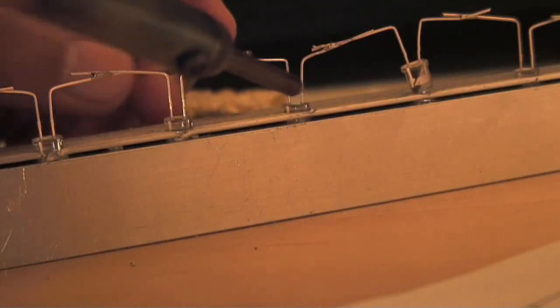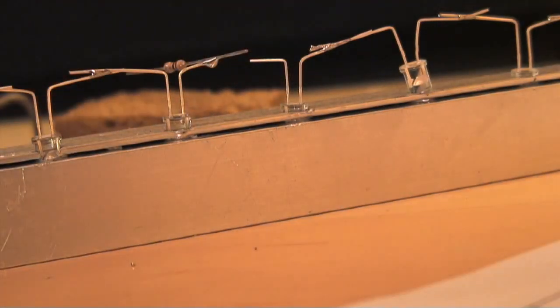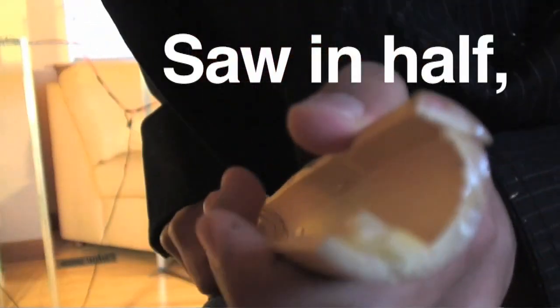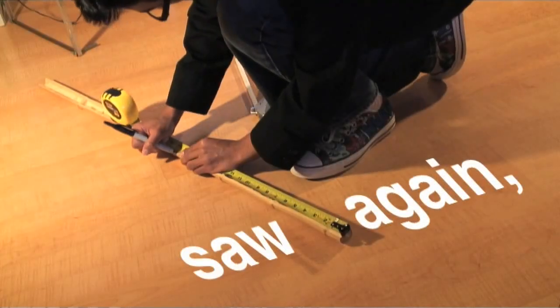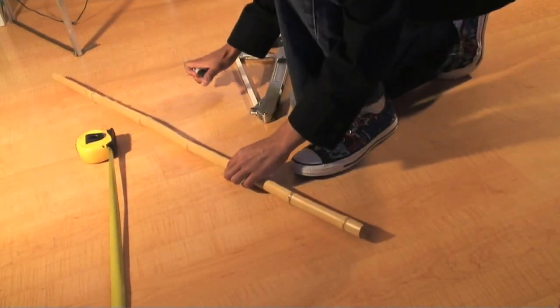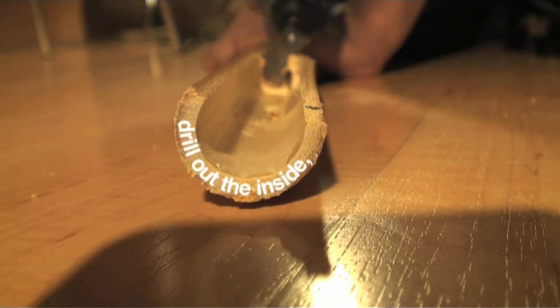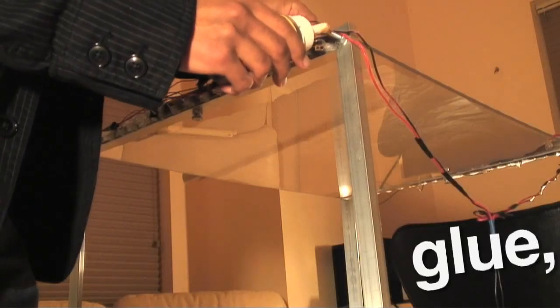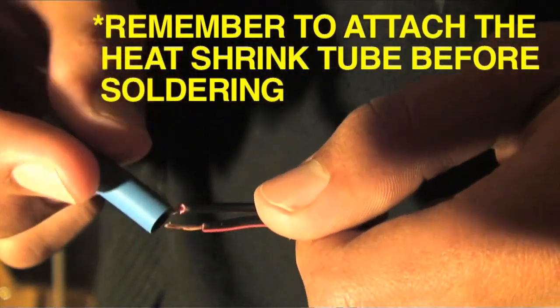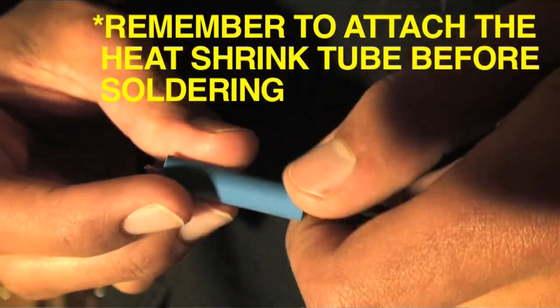Some last finishing touches that we need to add is to cover up all the exposed LED connections, so they won't all break. For this, we used a split piece of bamboo. Then we heat shrink the connection between the power adapter and the LEDs for the same reason.